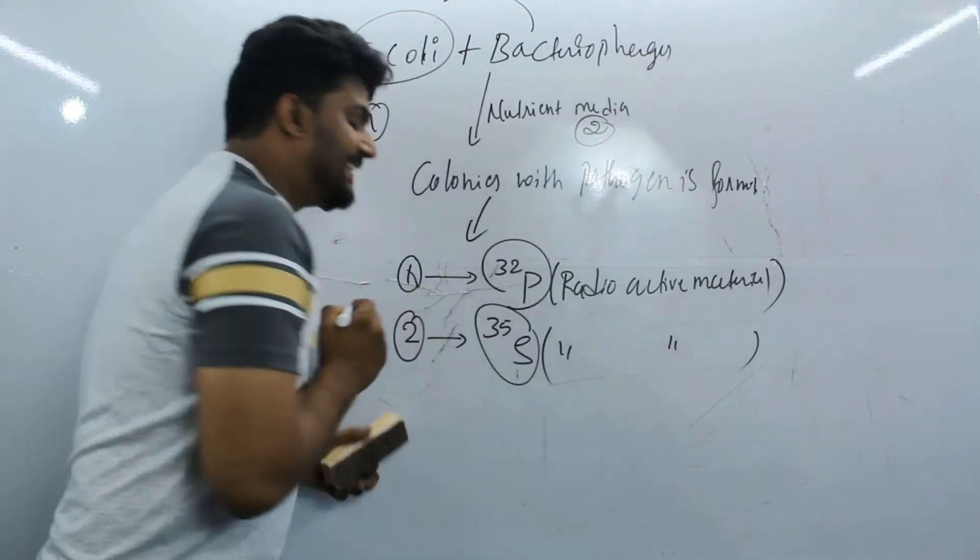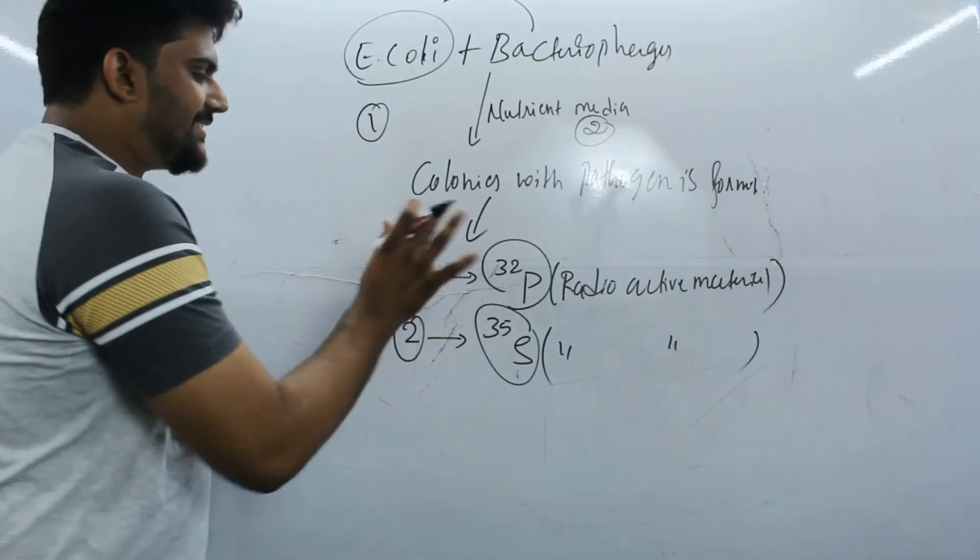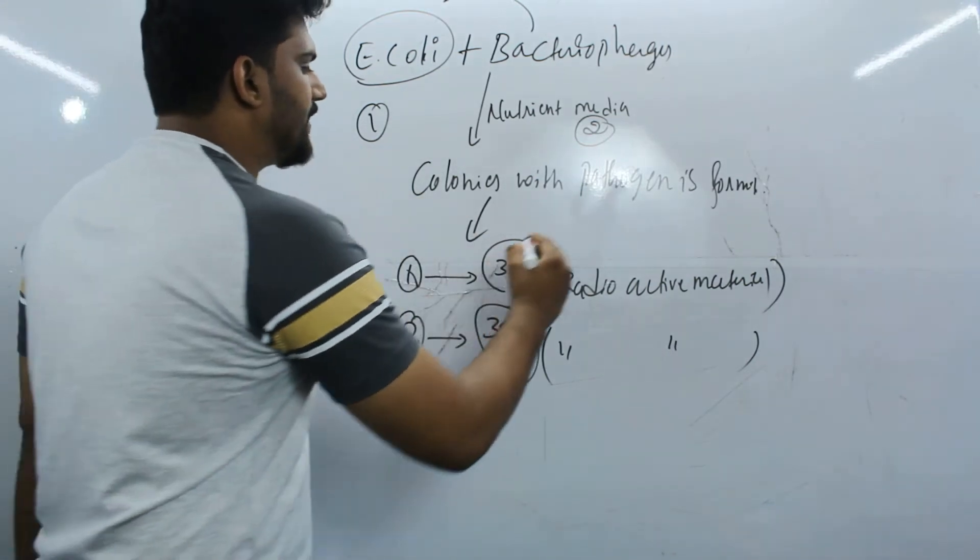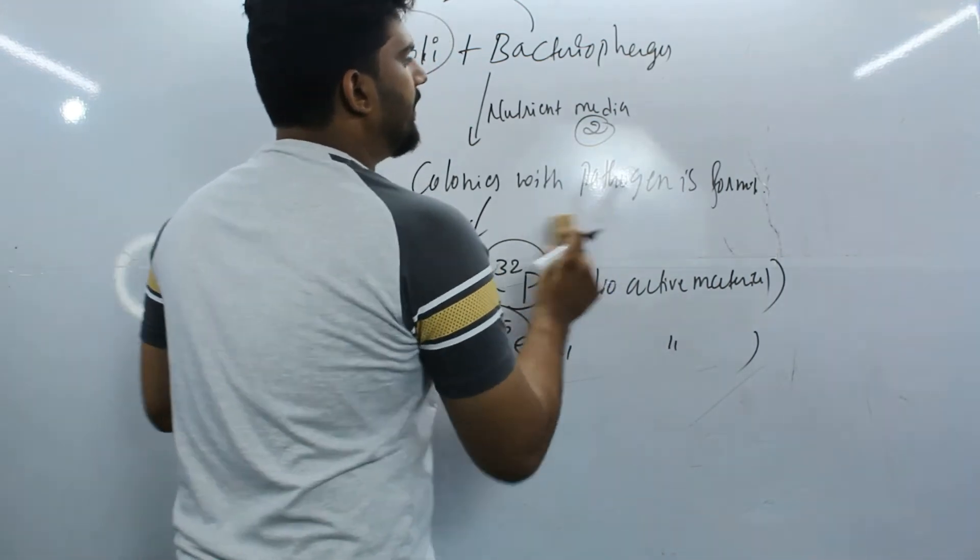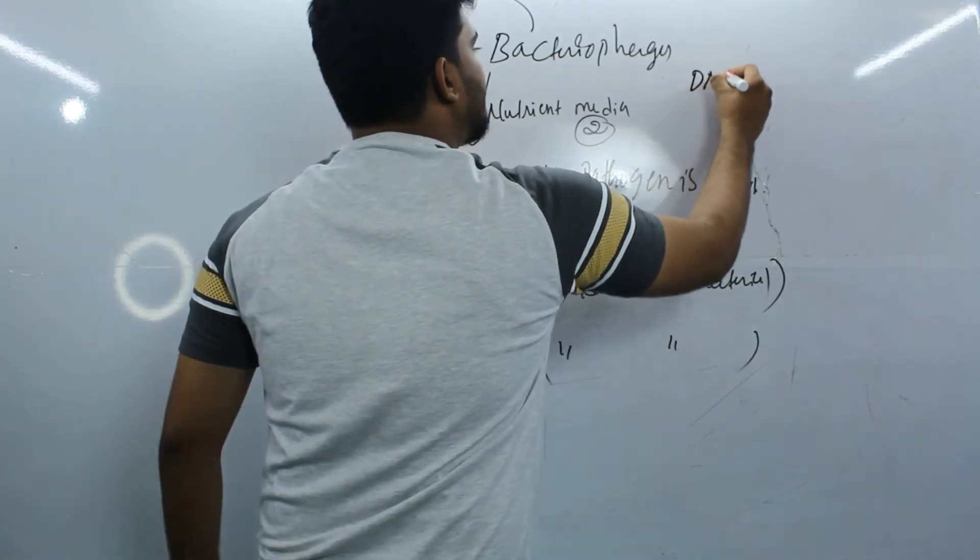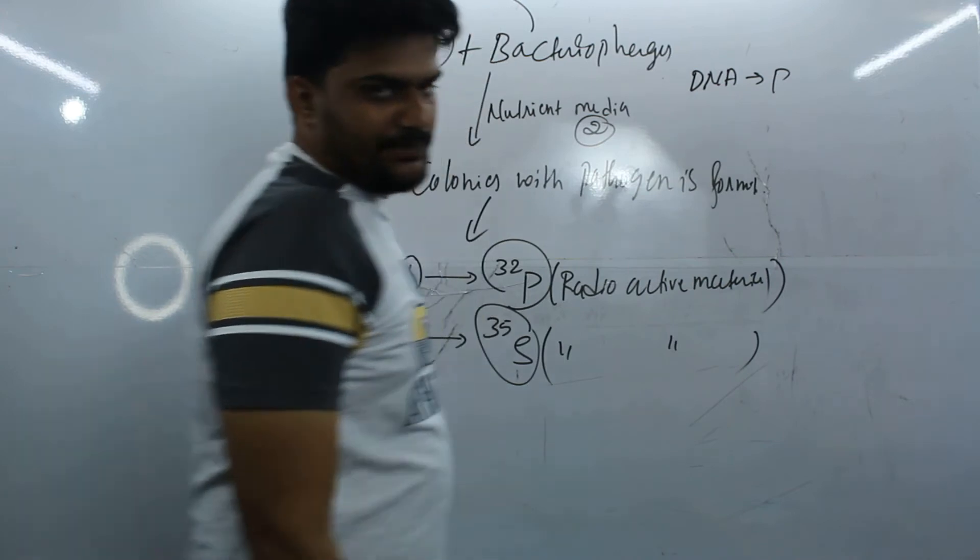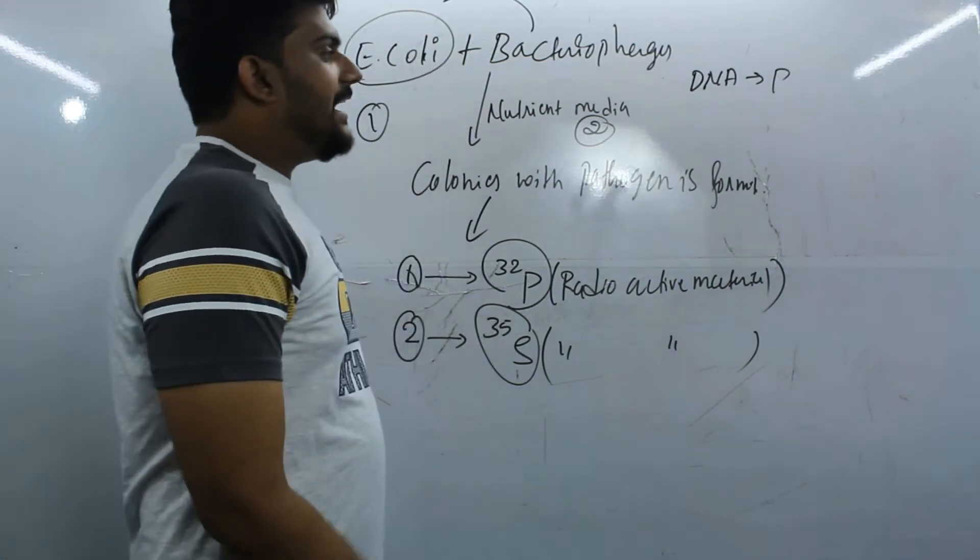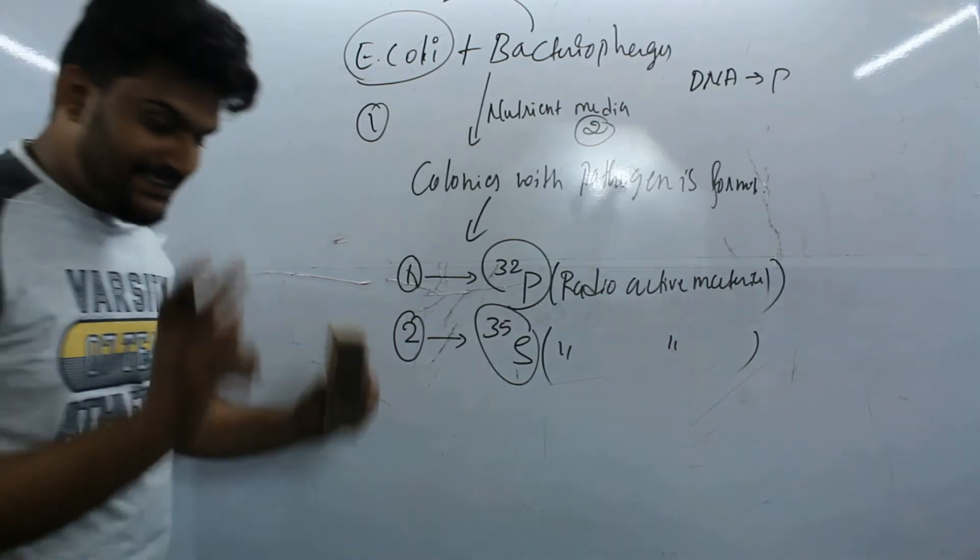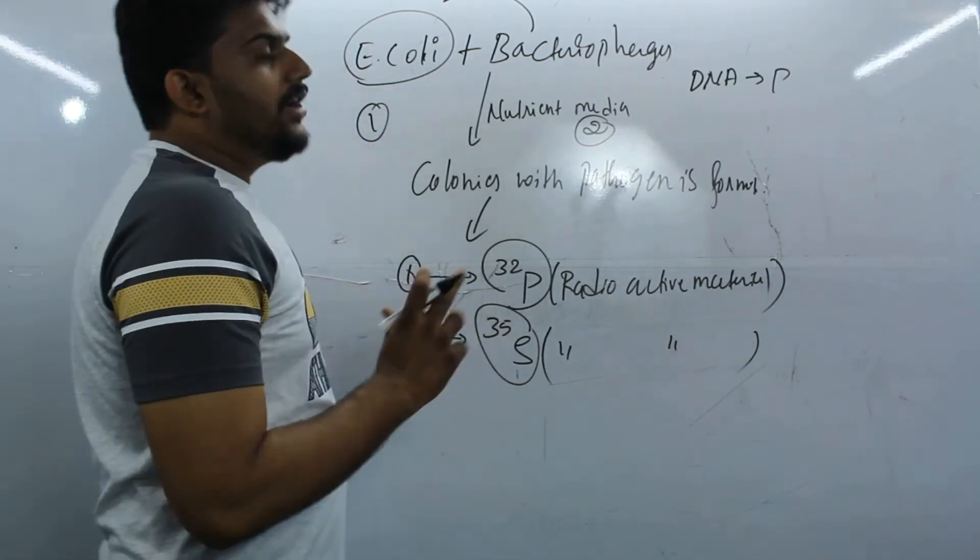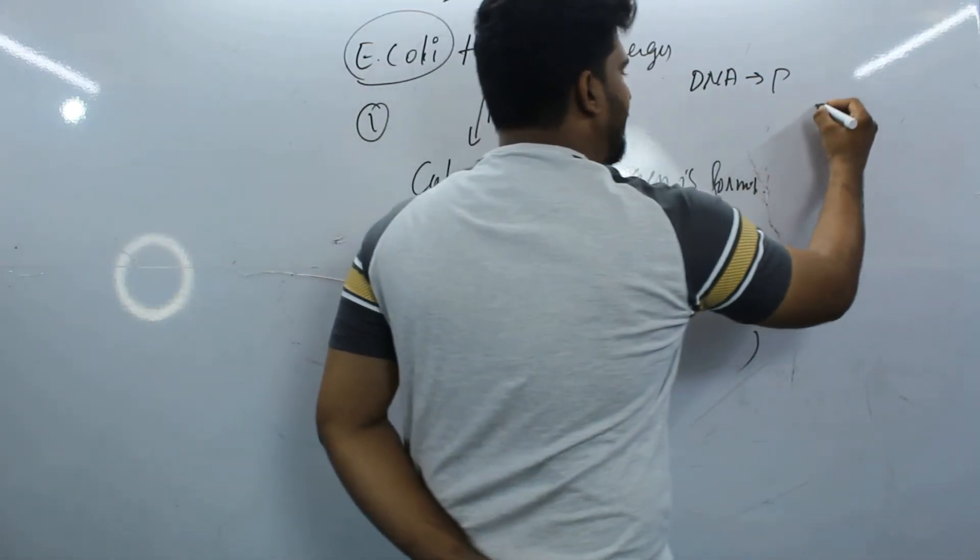I'll let you know why. First, why phosphorus? It's very simple - because DNA has phosphorus content. DNA has phosphorus content. And why was sulfur added in the second one? That's a very important question. Yes, because as you all know